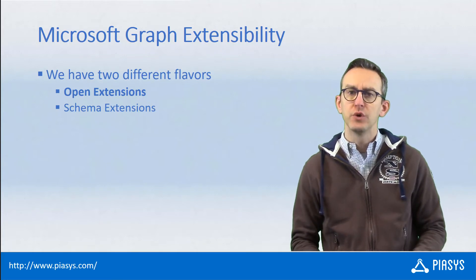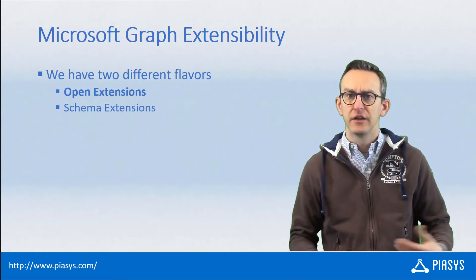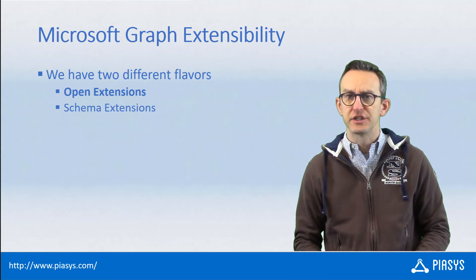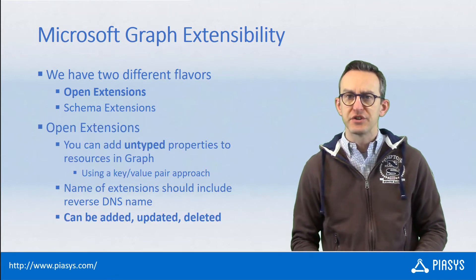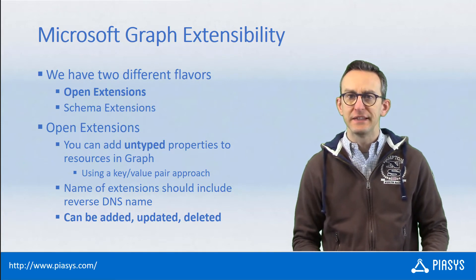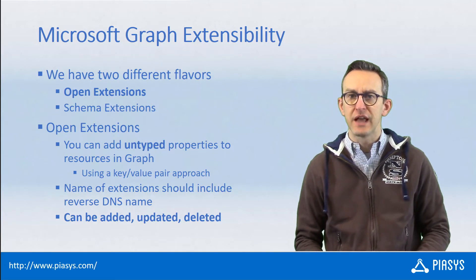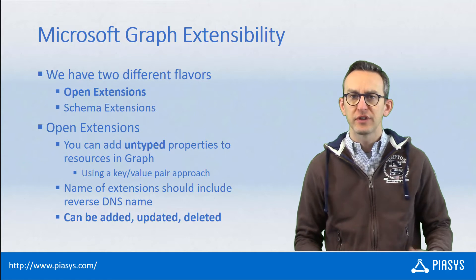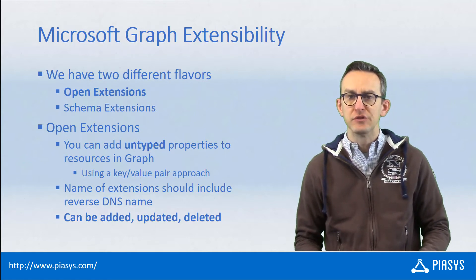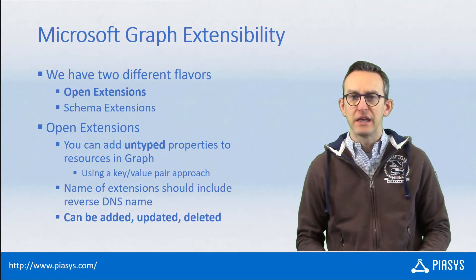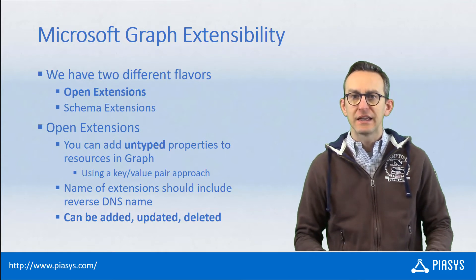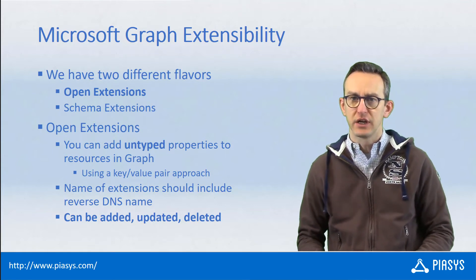Today I want to talk with you about the Open Extensions, and in the near future we will cover the Schema Extensions too. The Open Extensions allow you to add custom metadata to some of the entities that you can access through the Microsoft Graph, and those custom metadata can be defined and used based on a key-value pair, which is really useful whenever you want to add a custom set of metadata to an object.